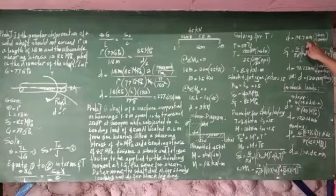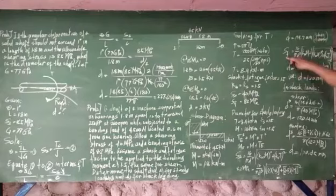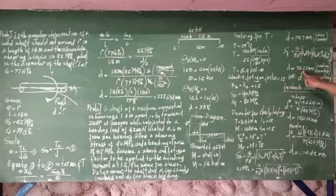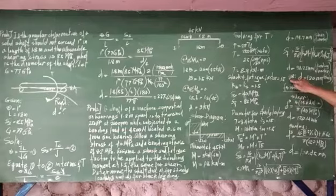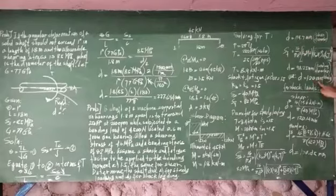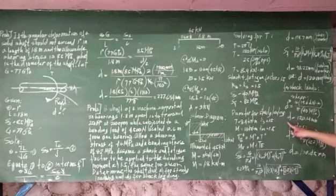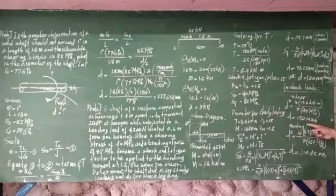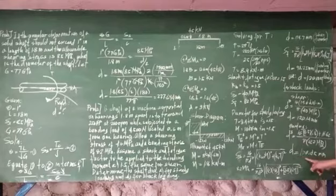In terms of flexural stress, we will have D equal to 98.25 millimeters on bending. We use the higher value so that it will be safe in terms of shear, which gives approximately 120 millimeters. For shock loads, D is equal to 120.14 millimeters in shear, and substituting values for bending, D is equal to 100.45 millimeters.